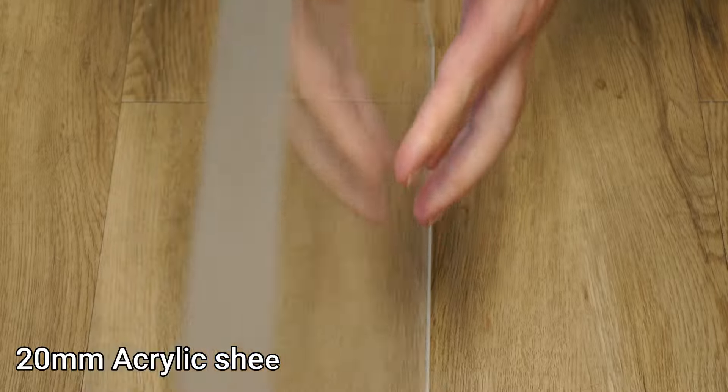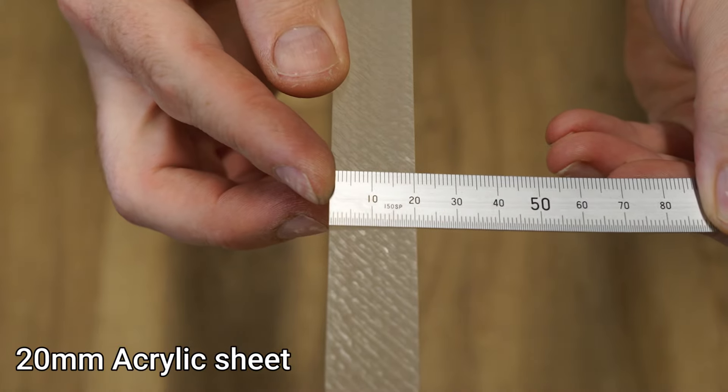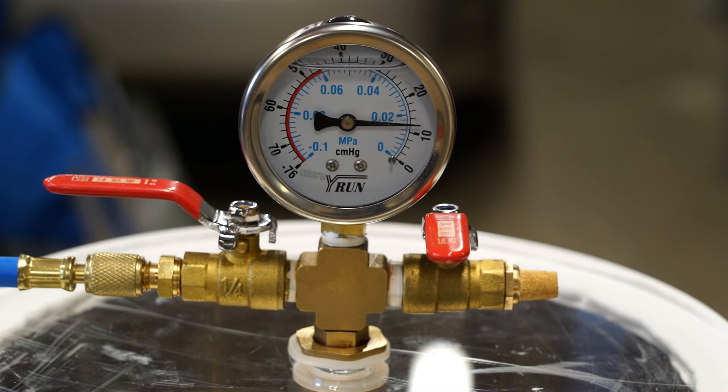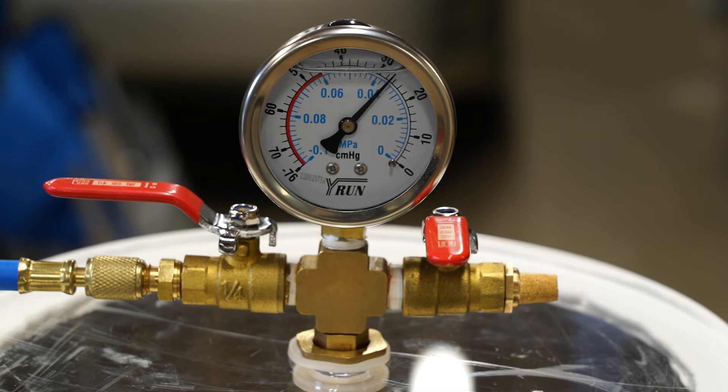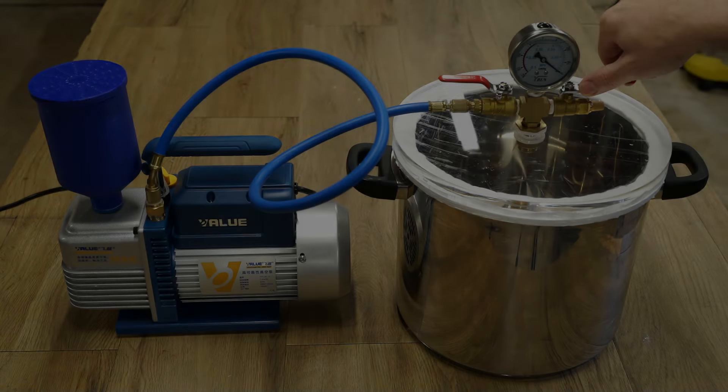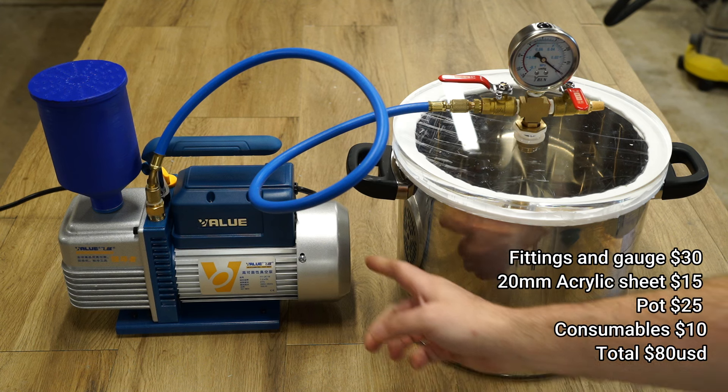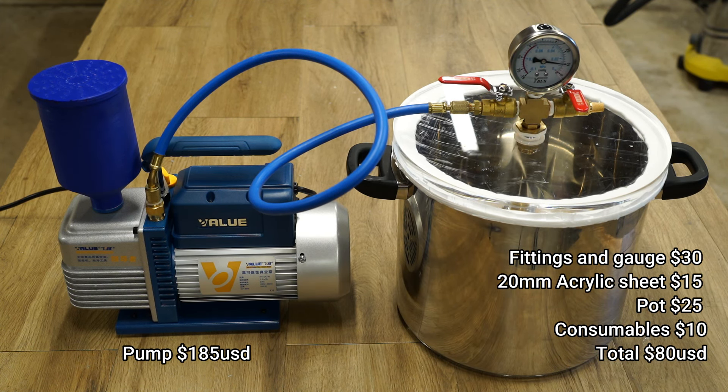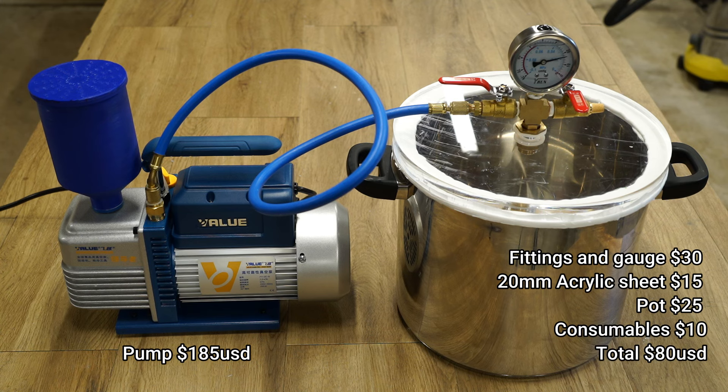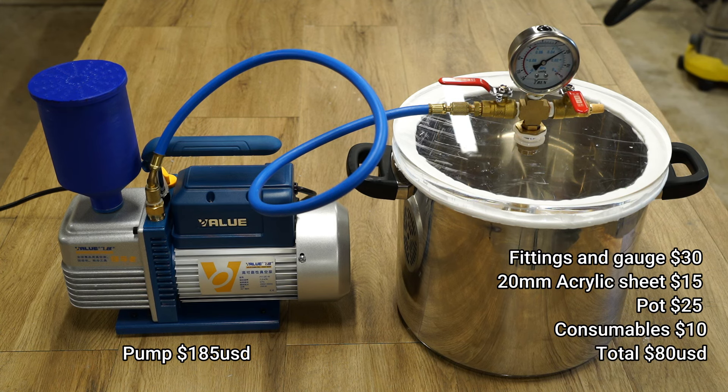The lid will be cut from 20 millimetre thick acrylic plastic, and the gauge fittings and taps come as a kit set from Aliexpress for only 30 US dollars. All up it costs me about 80 US dollars to build the chamber plus another 185 for the pump. I'll leave links to purchase the products in the video's description if you're interested.